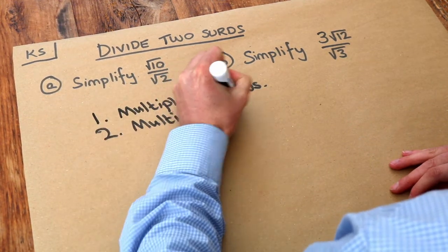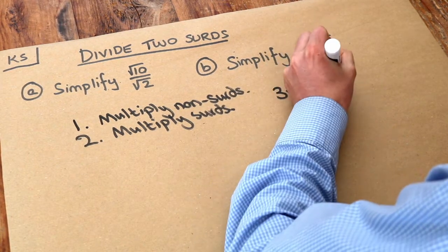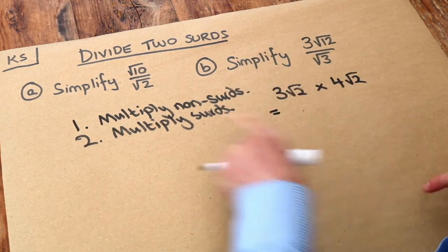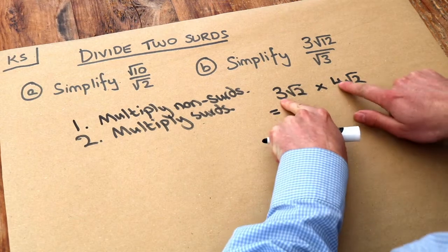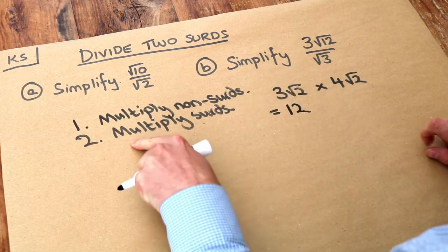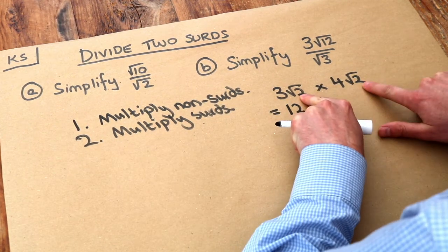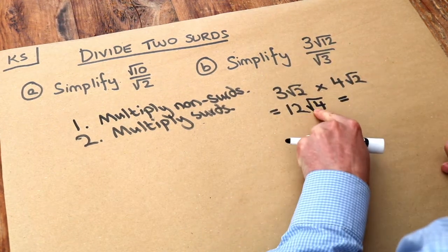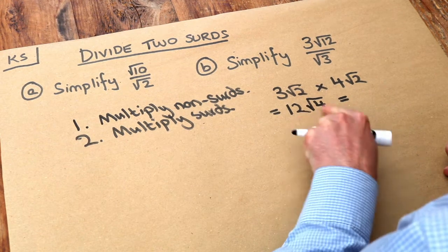So for example, if I was to have 3√2 multiplied by 4√2, I would first multiply the non-surds — the things without a square root over them, like the 3 and the 4. So 3 times 4 is 12. Then we multiply the surds: √2 times √2, we just do 2 times 2 which is 4, so it's √4. The square root of 4 is 2, so 12 times 2 is 24.